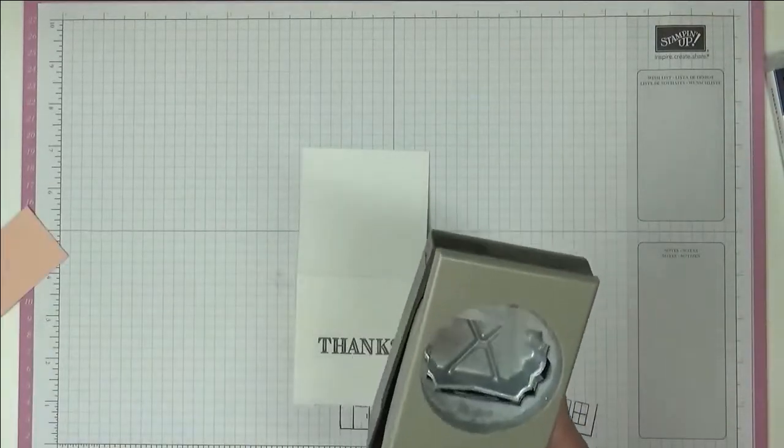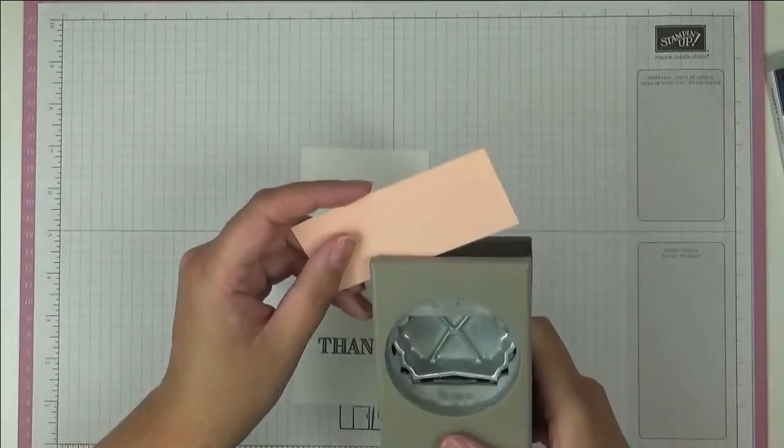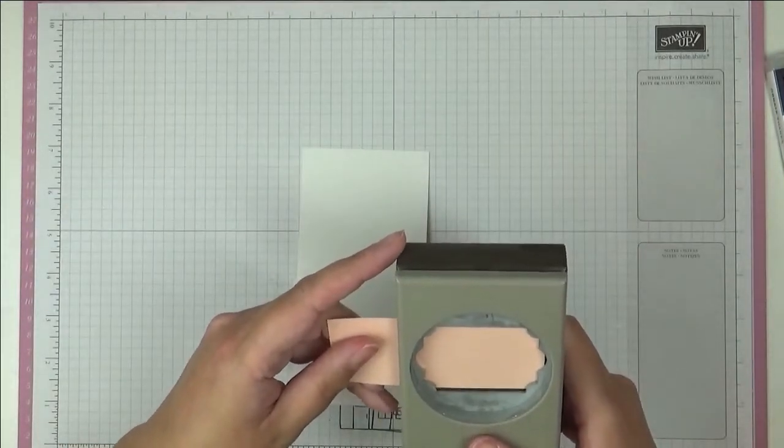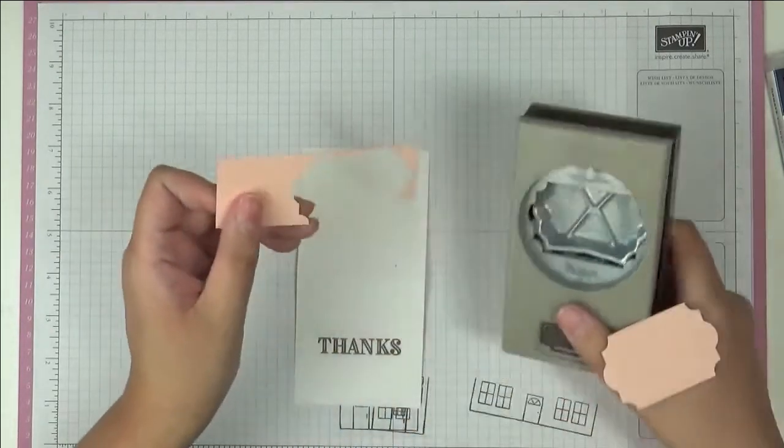And then I've got here the Everyday Label Punch and I've got a scrap piece of Petal Pink and I'm just going to punch out a piece like that.